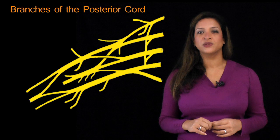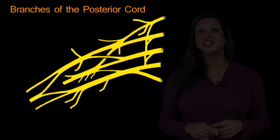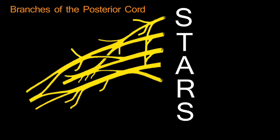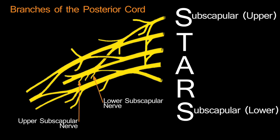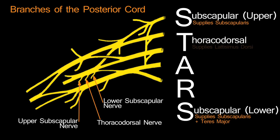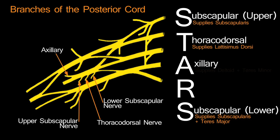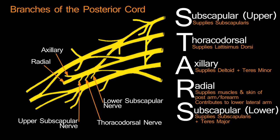There are 5 branches off the posterior cord, remembered with the mnemonic STARS. STARS begins and ends with S, reminding us of the upper and lower subscapular nerves, which supply subscapularis and teres major. T is for the thoracodorsal nerve, supplying latissimus dorsi. A is for the axillary nerve, which supplies deltoid and teres minor. R is for the radial nerve, which supplies all muscles in the posterior compartment of the arm and forearm, with major cutaneous contributions to the posterior arm, forearm and hand.